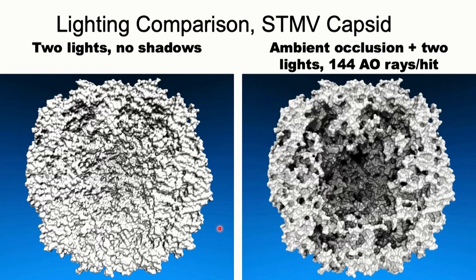Here is an example of what ray tracing can do. This is an STMV capsid — a spherical virus cut in half so you can see inside. The surface has rugosity, pores, and cavities. On the left, a regular render with two lights and no shadows makes it very difficult to identify these cavities. By switching on advanced ambient occlusion — a ray tracing technique — you can immediately see shadows cast by all these cavities without becoming an expert in lighting. The idea of ambient occlusion is that light comes from everywhere, like a cloudy day outdoors, casting shadows on all the bits and pieces of the structure.